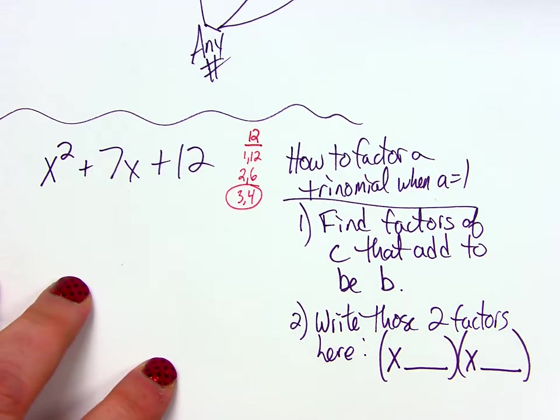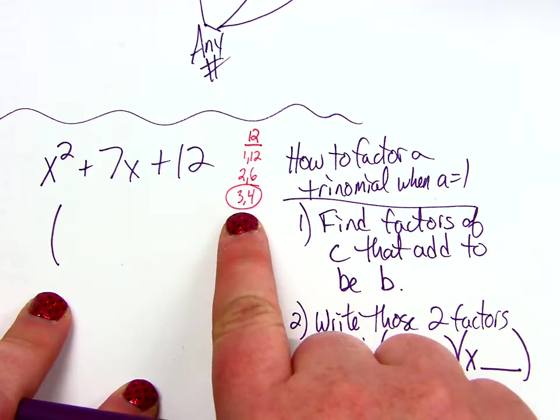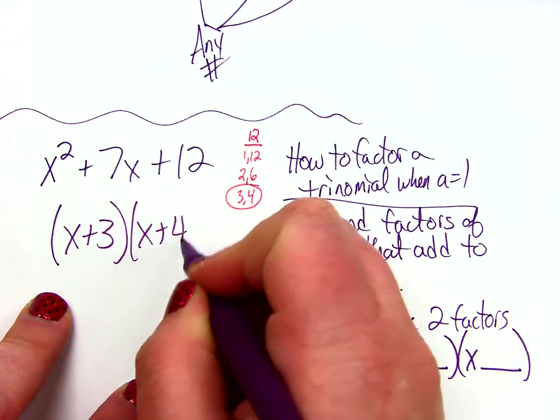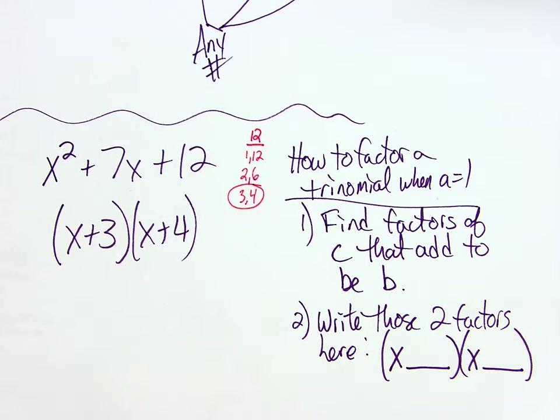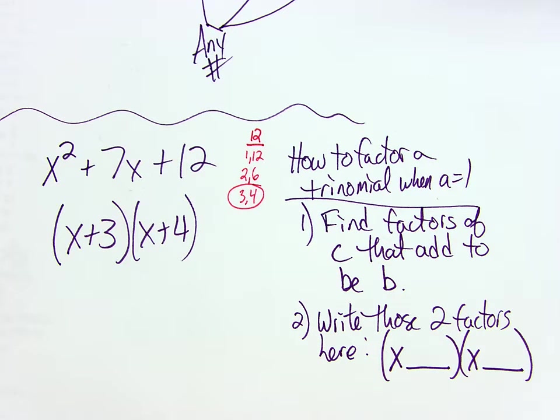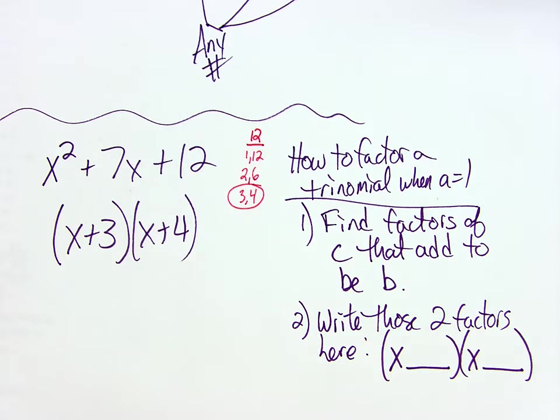I'm going to put x and then one of the factors and then x and then the other factor. So I got 3 and 4. So my answer is literally, and since these are both positive numbers, I'm going to have x plus 3 and x plus 4. If you foil x plus 3 and x plus 4 together, you're going to get right back here. Try it. Foil these two together. See if you actually get that.